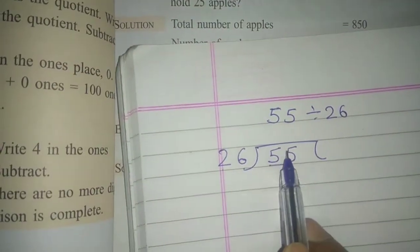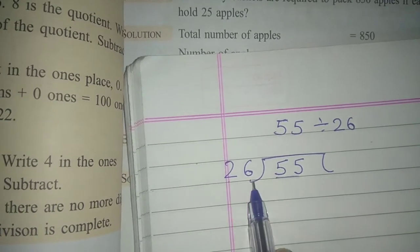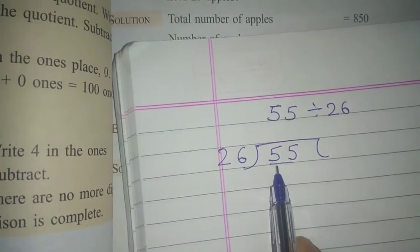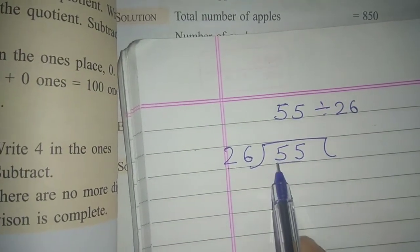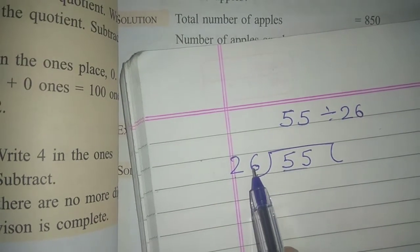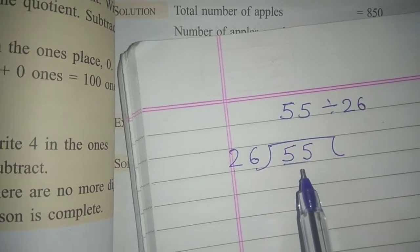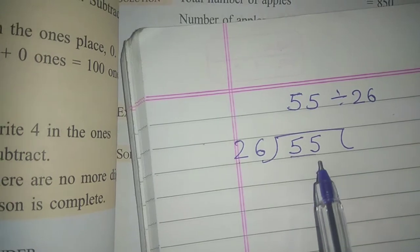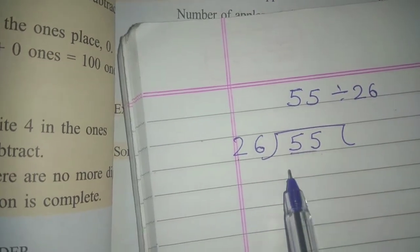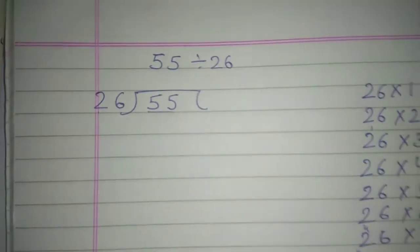First of all, the first digit is 5. This number is not divisible. Then we will take the second number, which means 55. Now from the 26 table, we will find which fits. 26 times 2 is 52.